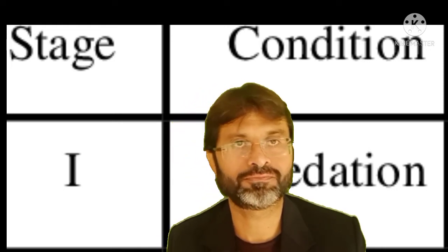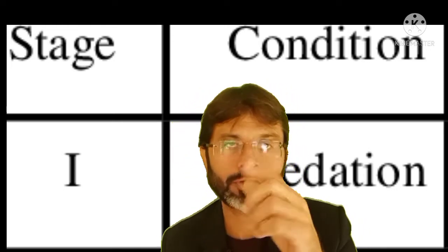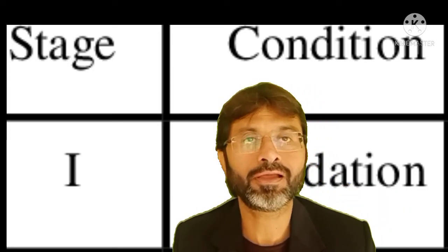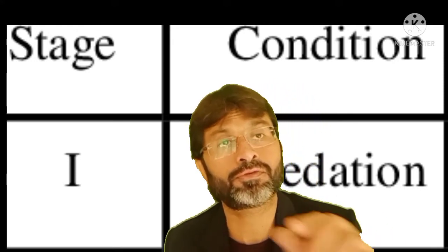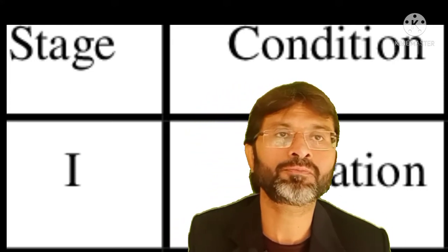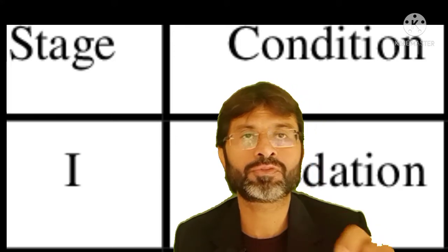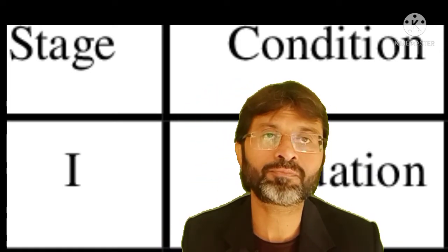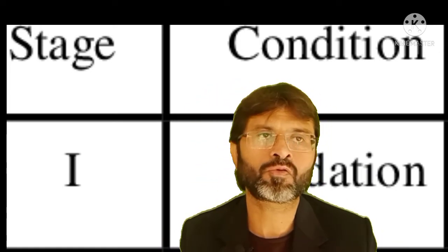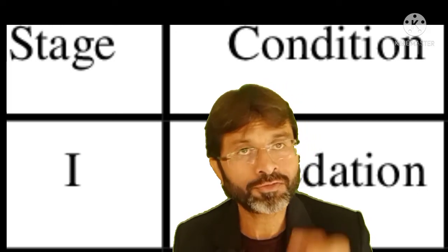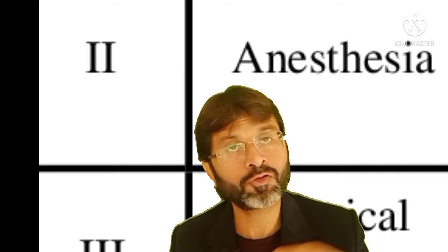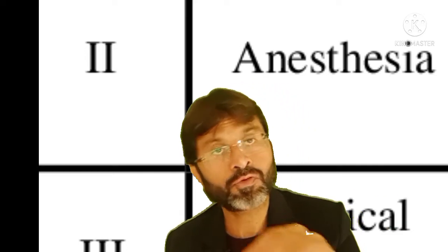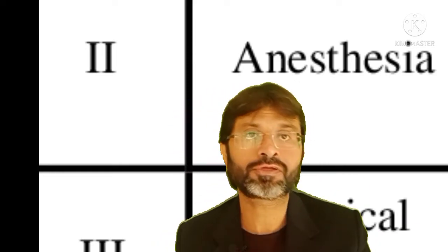Let's talk about each stage. Stage 1 of general anesthesia is called Analgesia or Disorientation — analgesia without amnesia. This stage involves a temporary loss of sensation, but the patient is still disoriented and can communicate with us. We can talk about pain and relief. These are the characteristics of Stage 1.